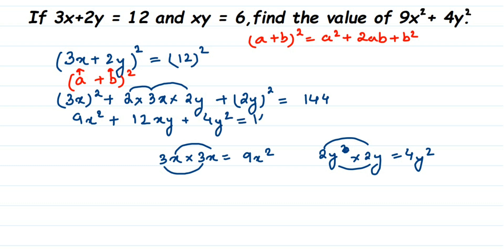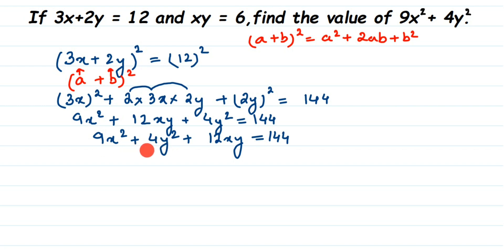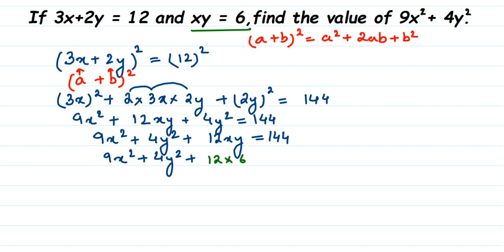So we get 9x squared plus 4y squared plus 12xy equals 144. Rearranging the terms for clarity: 9x squared plus 4y squared plus 12xy equals 144. We already have the 9x squared plus 4y squared we need, but there is the extra term 12xy. Since the question gives us xy equals 6, we substitute that value: 9x squared plus 4y squared plus 12 times 6 equals 144.